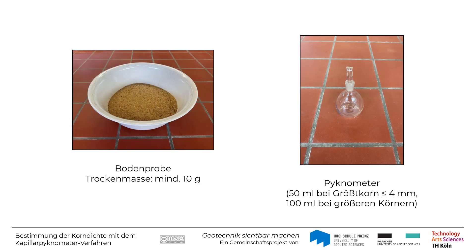Die Bodenprobe sollte eine Trockenmasse von mindestens 10 Gramm haben. Bei Verwendung eines 50 Milliliter-Pygnometers darf das Größtkorn der Probe maximal 4 Millimeter groß sein. Falls in der Probe größere Körner vorhanden sind, können diese zerkleinert werden oder es muss ein größeres Pygnometer verwendet werden.